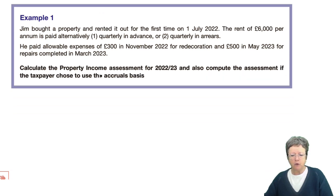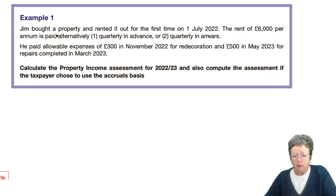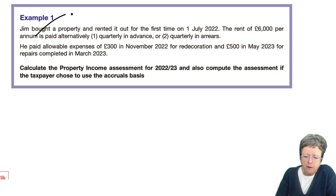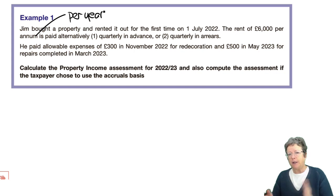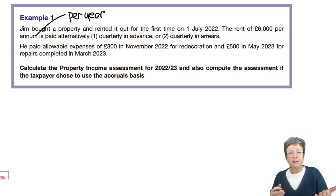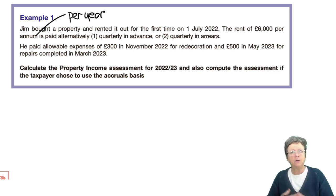Now, this example I want to show you — we're going to do a cash basis in two situations. Jim bought a property and rented it out for the first time on the 1st of July 2022. Rent was £6,000 per year, and it was either paid in advance or paid in arrears. So we'll do those two examples so that if an exam question tells you it's quarterly in advance or quarterly in arrears, you'll have an example here to help you understand both.